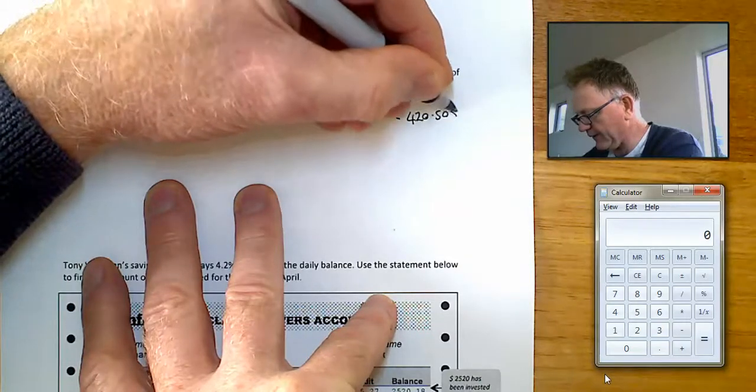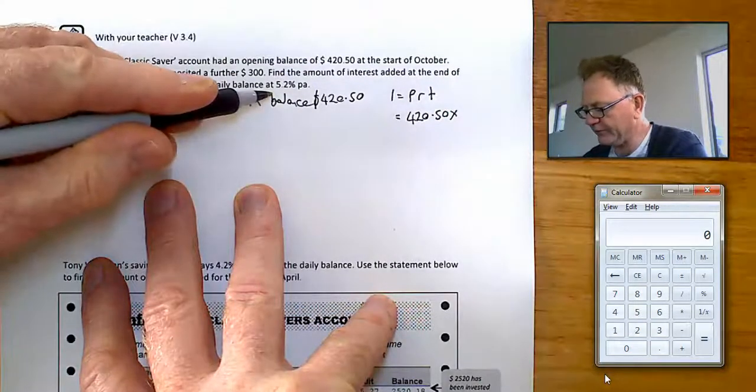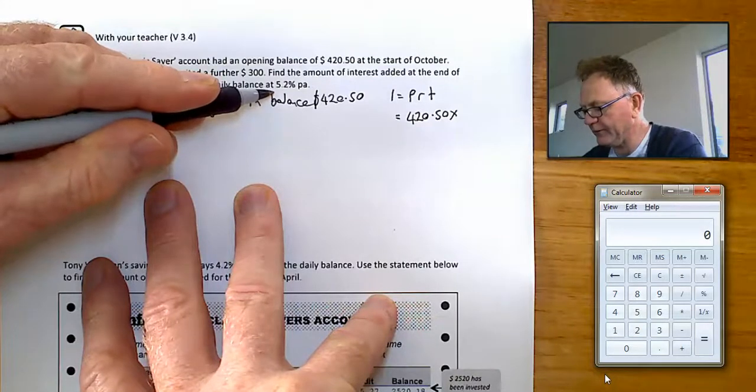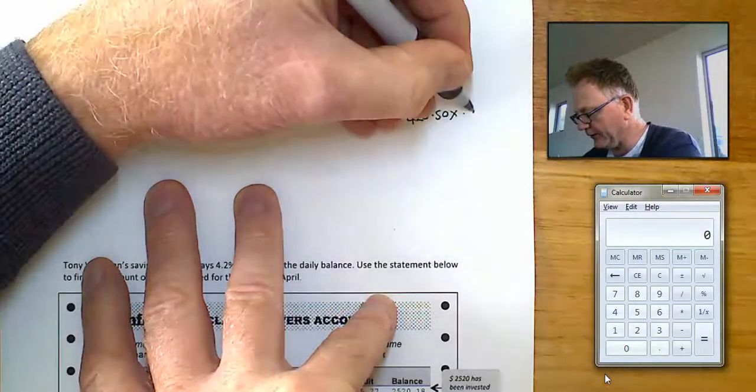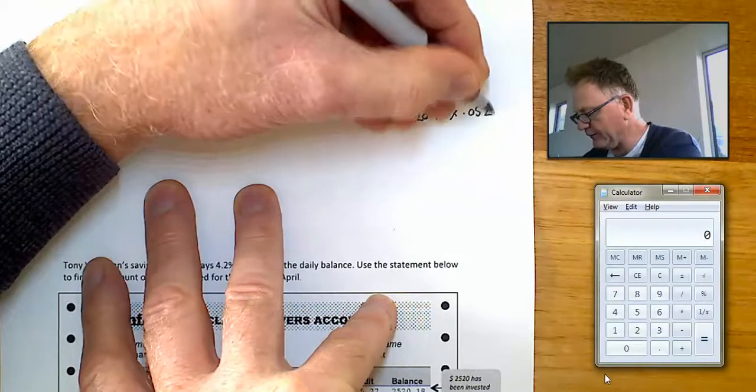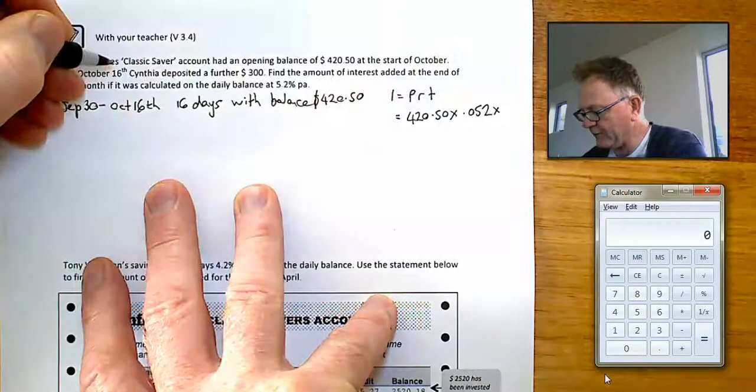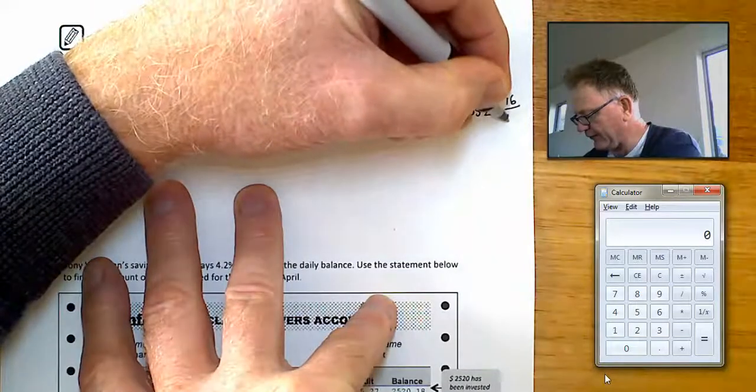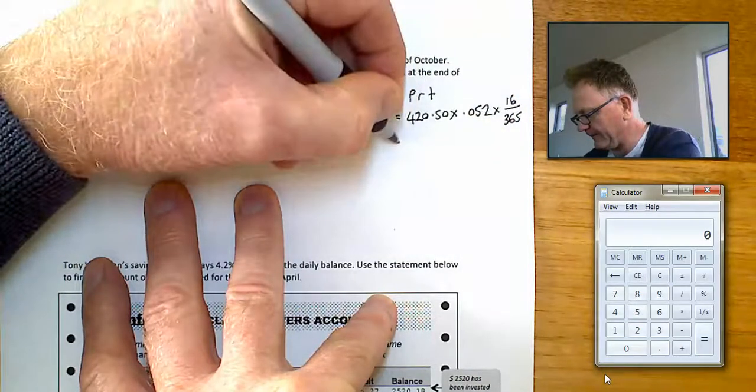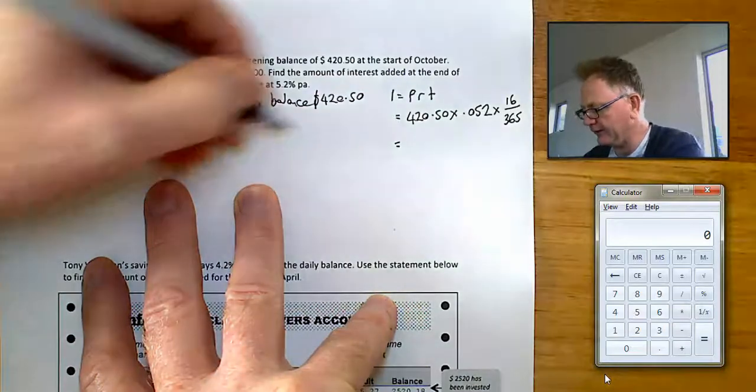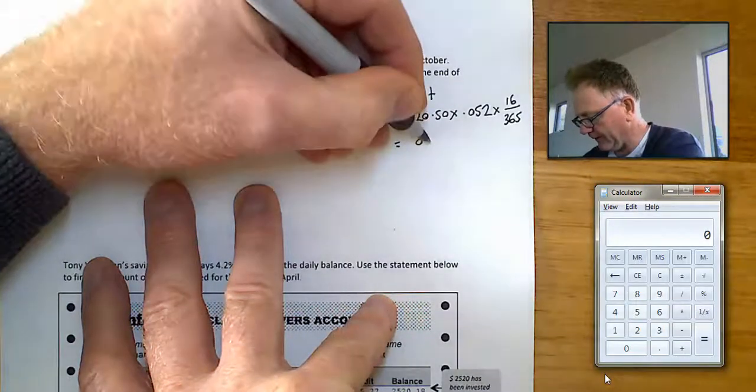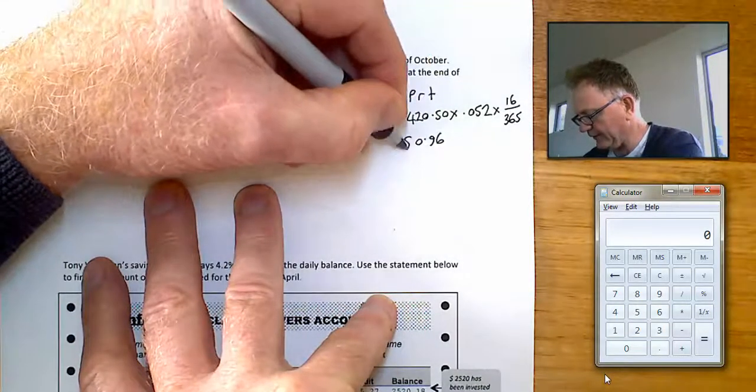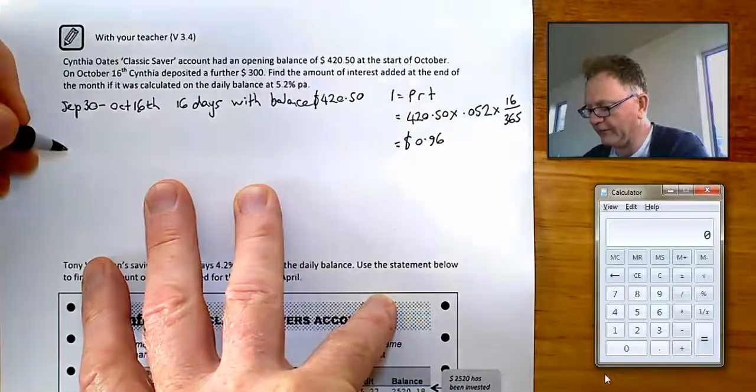The interest rate was 5.2%. I'm going to write that as a decimal, so it'll be .052. And the time of the investment was 16 days out of 365 in a year. You can work that out using your calculator. I get 96 cents interest for those 16 days.